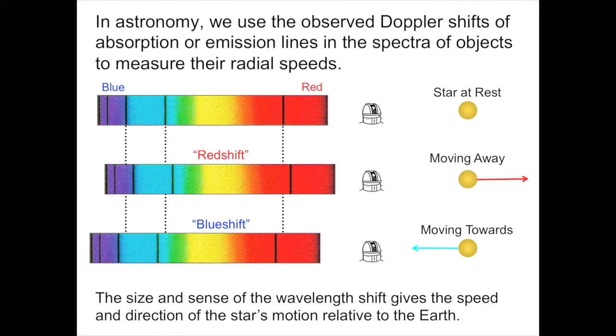Put together, both the size of the shift and the sense of the shift, whether blue or red, tells me the speed and direction of the star's motion relative to Earth. This Doppler effect in stellar spectra is going to be very important to us when we attempt to measure small changes in the speed of a star due to the fact that the star and an unseen massive planet are orbiting about their common center of mass. We're going to call this the Doppler or radial velocity method.